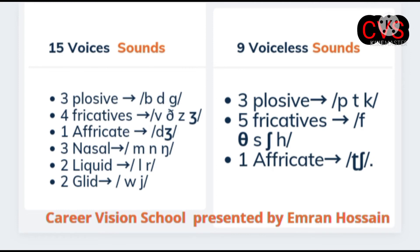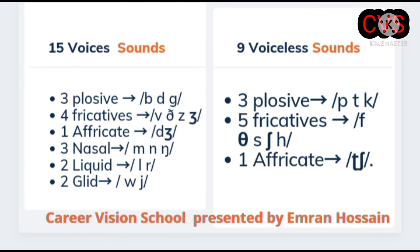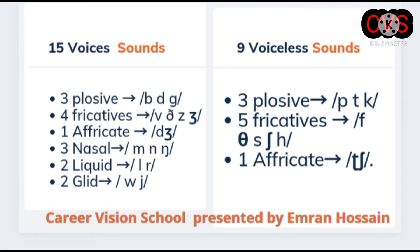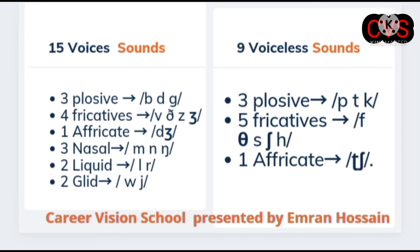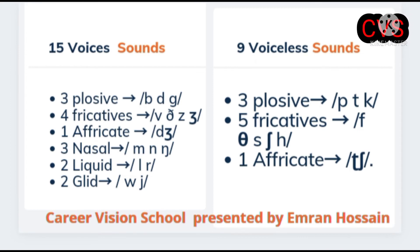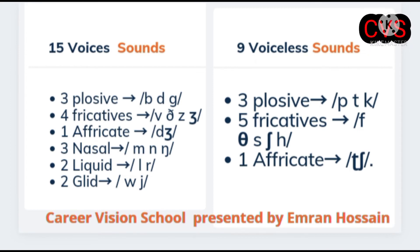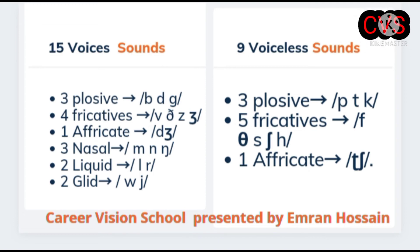In English IPA, there are 5 voiced and 9 voiceless sounds. On the screen, there are 3 plosive sounds, 4 fricative sounds, 1 fricative voiced sound, 3 nasal voiced sounds, 2 liquid voiced sounds, and 2 glide sounds.